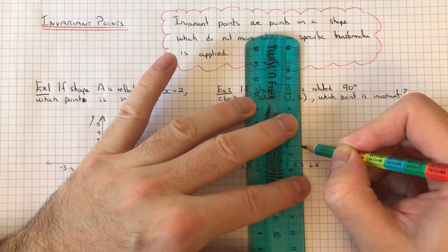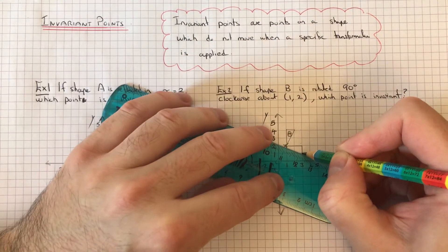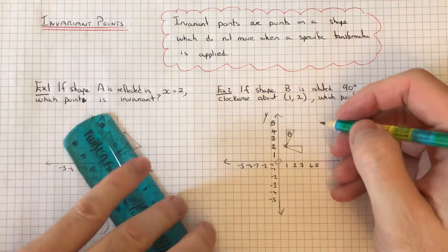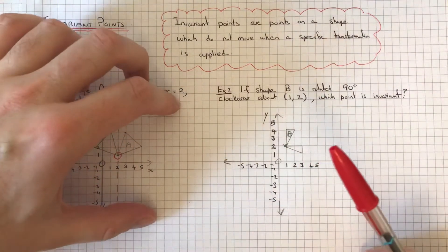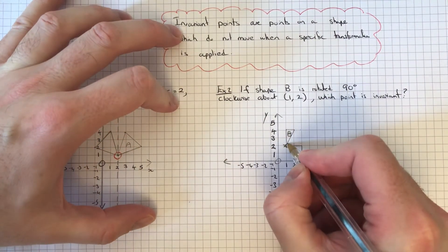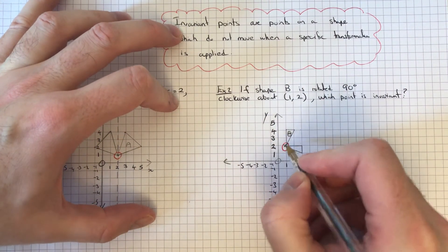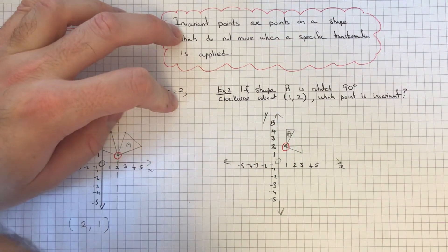you can't see what it is, just use some tracing paper. Okay, so again we just need to look for the point which didn't move. The point which remained in the same place is this point here. This